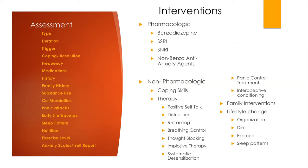The next technique is thought blocking. This is where we identify negative or anxiety-provoking thoughts and train ourselves to stop those thoughts before they finish. The rubber band technique works well for this. Another one is using a cue card where you write down the negative thought and on the back you change it to a positive thought. If you start experiencing that thought, you start reading the cue card and flip it over quickly to read the positive one, so your mind starts to associate that thought with the positive thought.